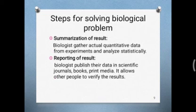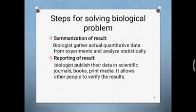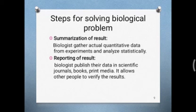The next step is summarization of results. After biologists complete all their experimentation, they move to the next step: summarizing results — gathering them together. Biologists gather actual quantitative data from experiments and analyze it statistically — they apply mathematical rules to the data. After analyzing this data, biologists draw conclusions. After data is gathered and summarized, the next step is reporting of results.